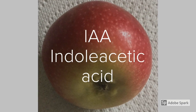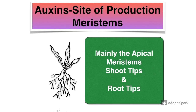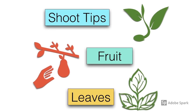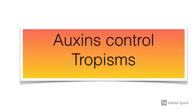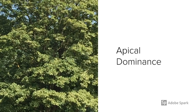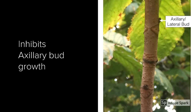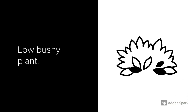Let's look at growth promoters — auxins — in more detail. IAA, or indole acetic acid, is one of the most well-known auxins. Auxins are produced at the meristems, particularly the apical meristems at the root tips and shoot tips, but also found in developing fruit and in young leaves. Auxins have many roles; one is to control tropisms. Auxins are also responsible for apical dominance — where auxin produced at the apical meristems at the tip of the plant prevents side branching, inhibiting the growth of the axillary or lateral buds. By removing the apical bud, you remove the site of auxin production.